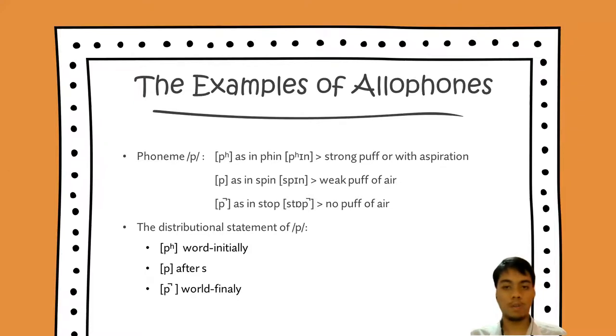Another example of allophones is phoneme P, as in pin, spin, and stop. In pin, the P sound has strong puff with aspiration. We say pin, and in spin is a weak puff of air. While in stop, it's not powerful, it's just like we hold something.